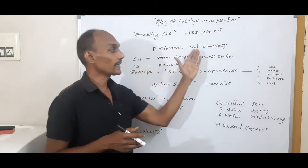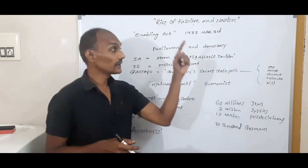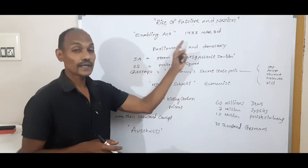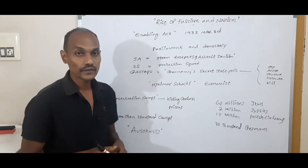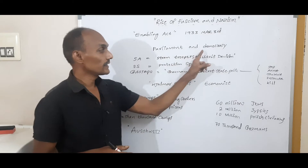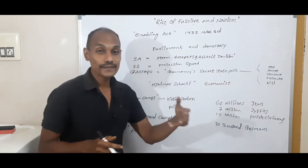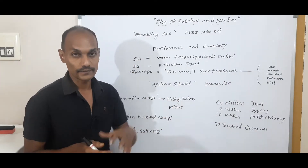After the Enabling Act was passed, he put aside the Parliament and government and started a regime — that means rule — by his own orders.